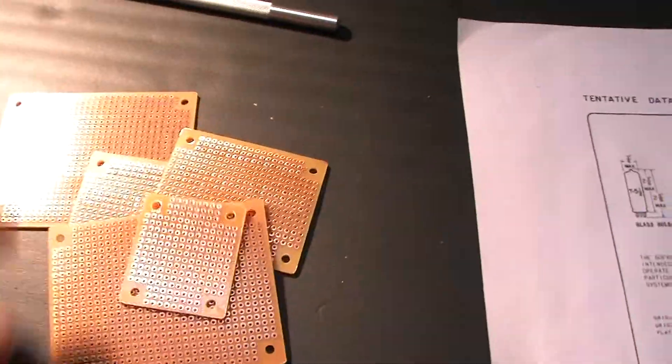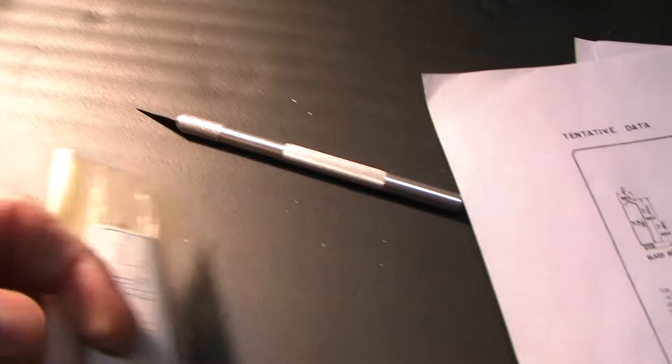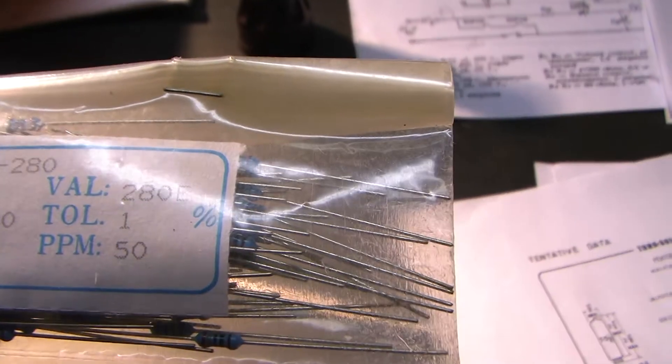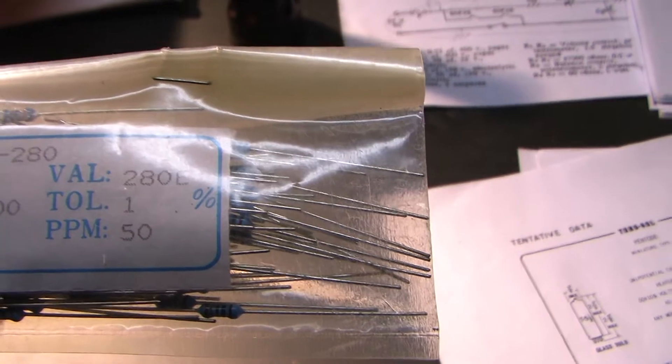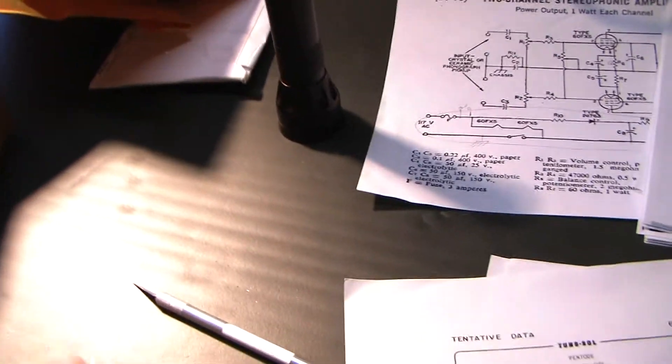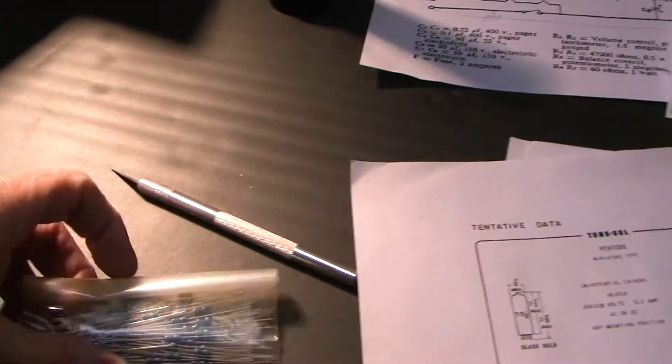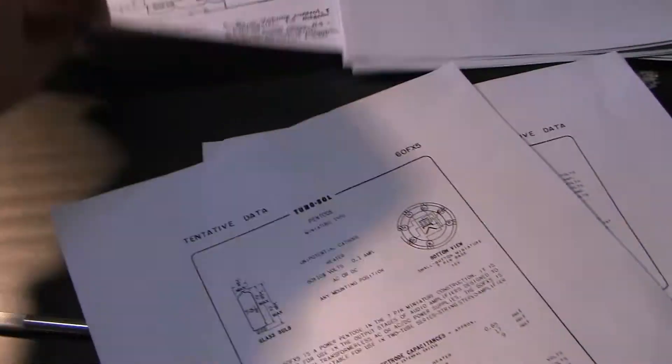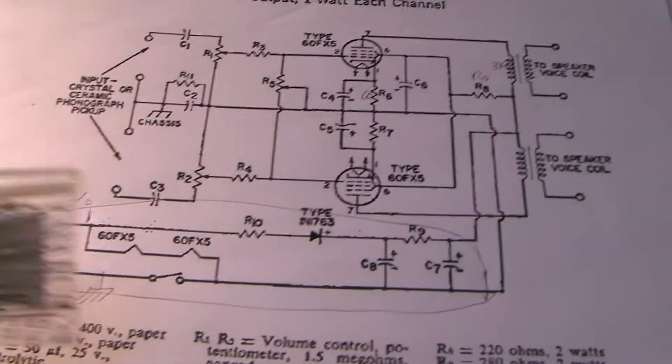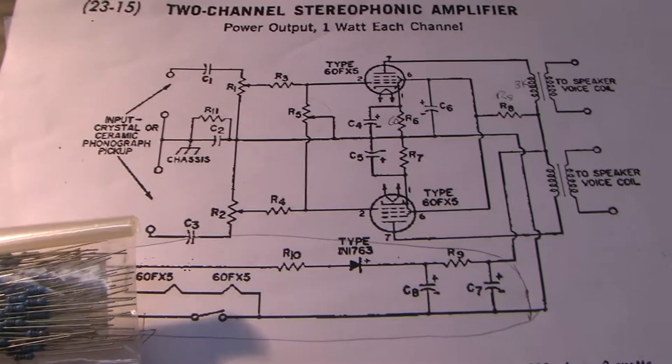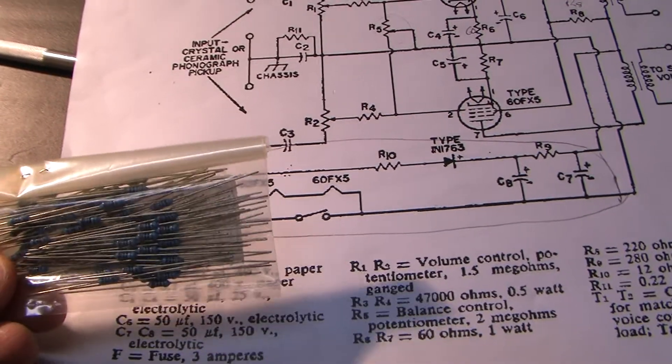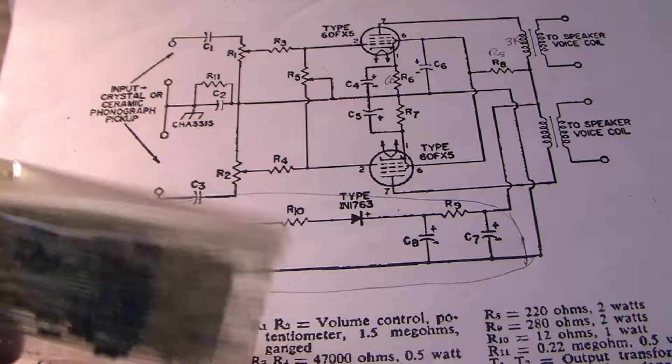And some more resistors, they're quarter watt, 280 ohm, one percent metal film. I forget where these go, but there were certain values that the schematic called for that I couldn't find at a reasonable price, so I'll have to make the proper resistors out of series and parallel combinations of other resistors. But that's fine, I don't mind doing that.